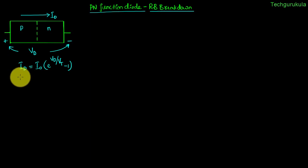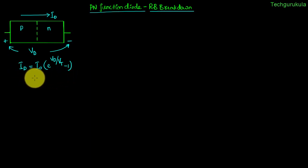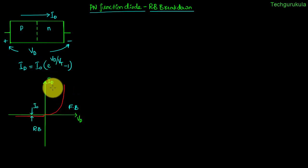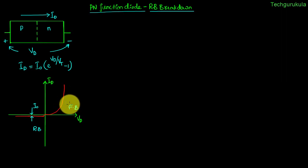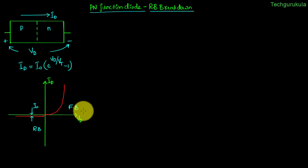If you plot this equation by taking current on the y-axis and V_D on the x-axis, this is how it looks. When V_D is positive, current flows in the direction of assumption I_D, and we call this forward bias because it allows current to flow through the P-N junction diode.